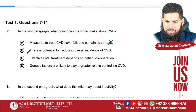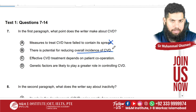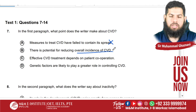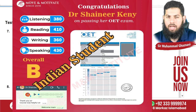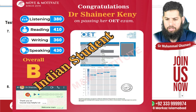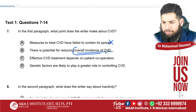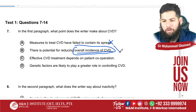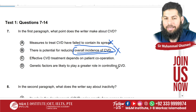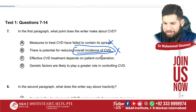Option B says 'there is a potential for reducing overall incidence of CVD.' They were discussing things related to increase of CVD, so it seems wrong at first. I will initially consider it a wrong answer and come back to show you how it is actually the right answer. Option C — 'effective CVD treatment depends on patient cooperation' — is not in the paragraph. Option D — 'genetic factors are likely to play a great role' — has also not been discussed in the first paragraph.